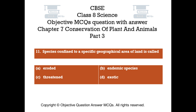Question number 11. Species confined to a specific geographical area of land is called: Option A - Eroded. Option B - Endemic. Option C - Threatened. Option D - Exotic.